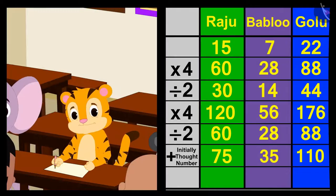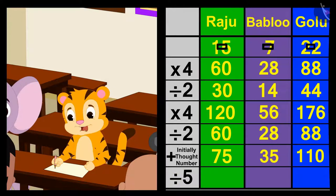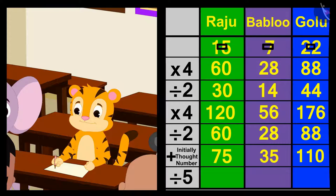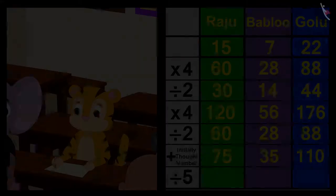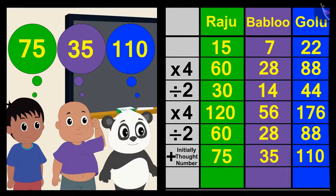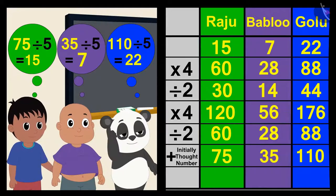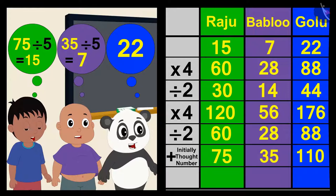Now if you divide your answer by five, then you will get your originally thought number in the answer, Shere Khan said excitedly. The three friends divided their answer by five and could not believe their eyes.